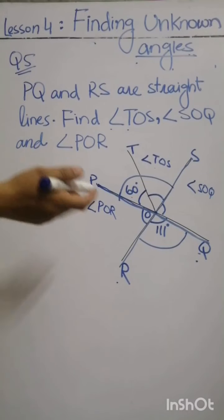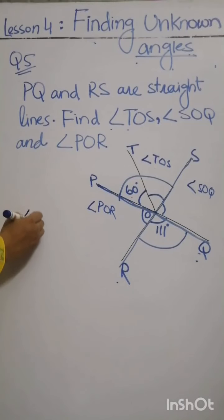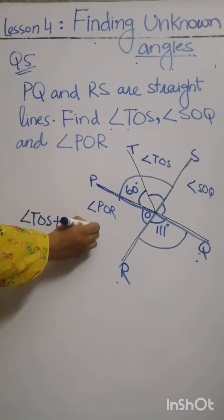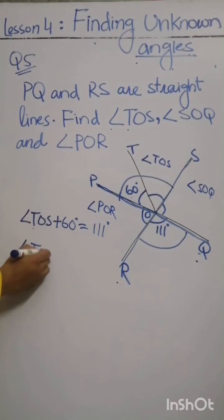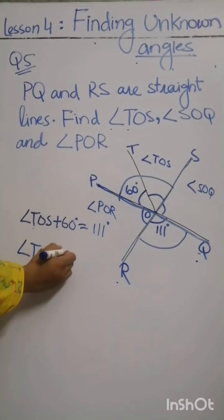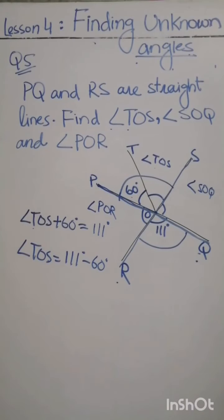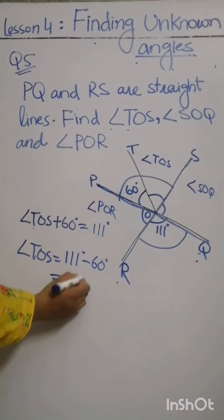Since angle TOS plus 60 degrees equals 111 degrees, we take 60 to the other side and get angle TOS equal to 51 degrees.